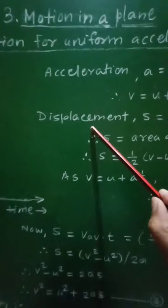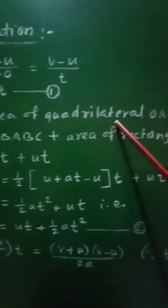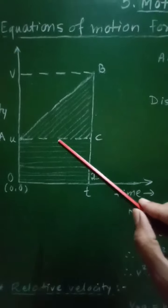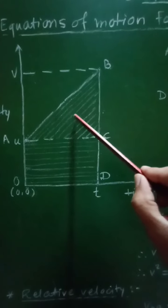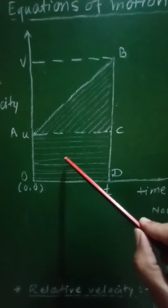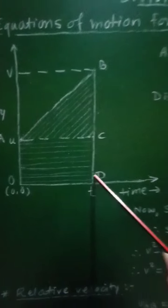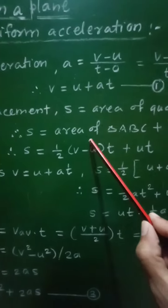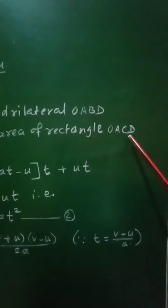Therefore, displacement S will be given as the area of quadrilateral O, A, B, D. If we consider this quadrilateral, its area will be equal to the sum of the area of triangle A, B, C and the area of rectangle O, A, C, D. Therefore, displacement S equals area of triangle ABC plus area of rectangle OACD.